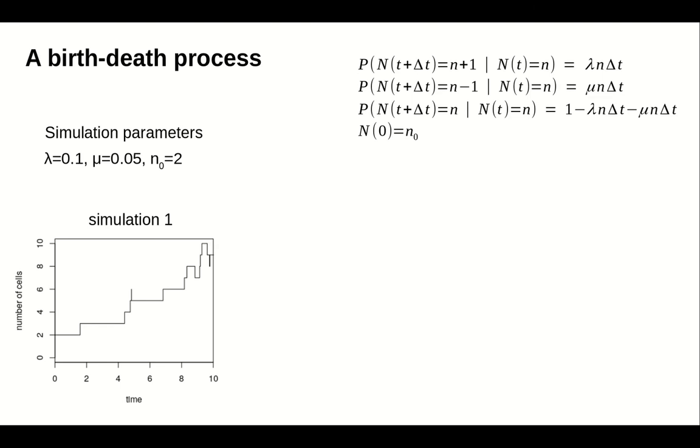Here is the result of one simulation. We see births where the number of cells jumps up by 1, and deaths where the number of cells drops by 1. In this simulation, the births happen more frequently than the deaths, and the population size increases, reaching 10 at some point. Since the birth rate is twice the death rate, it's not surprising that we see more births.